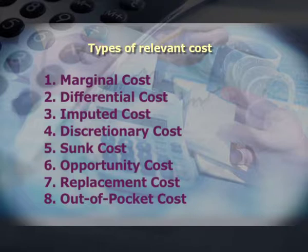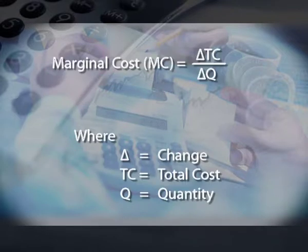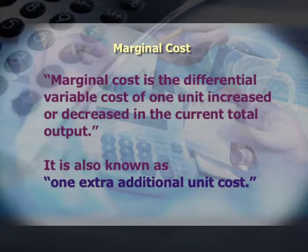Let us begin with marginal cost. Marginal cost means the difference in total current cost with the manufacturing of one more product. That is, marginal cost is the differential variable cost of one unit increased or decreased in the current total output — it is also known as the one extra additional unit cost. Marginal cost is generally taken as variable cost because variable cost changes with an increase or decrease in the level of output. Fixed cost is considered a period cost and is assumed to be already covered in the total cost of the current level of output. It is helpful in making price changes when an unexpected order is received, or for make-or-buy decisions.